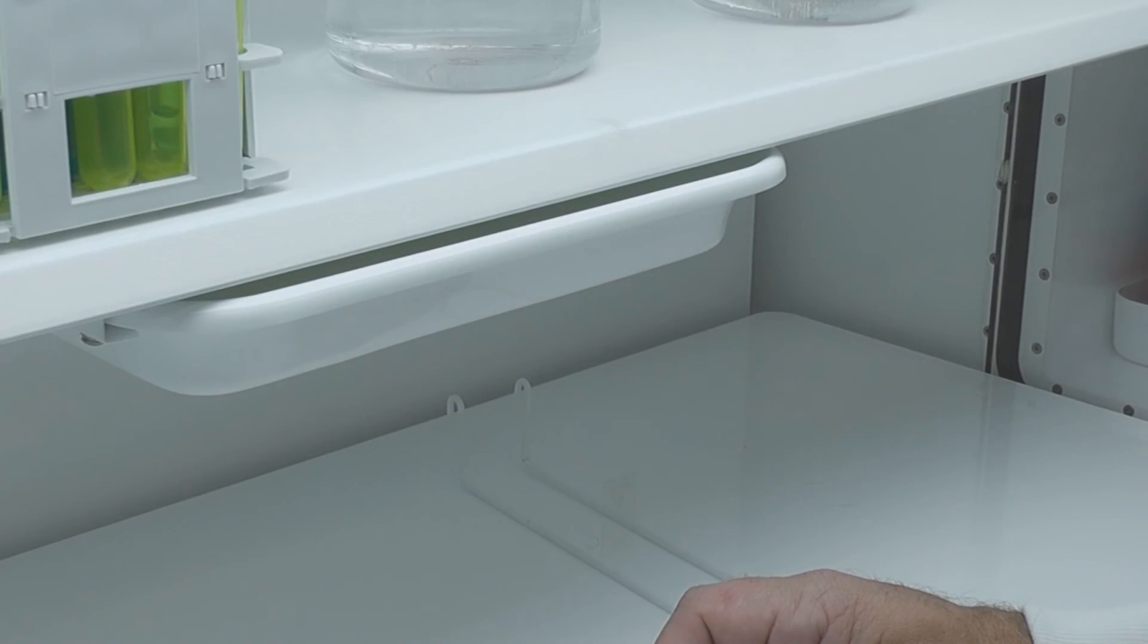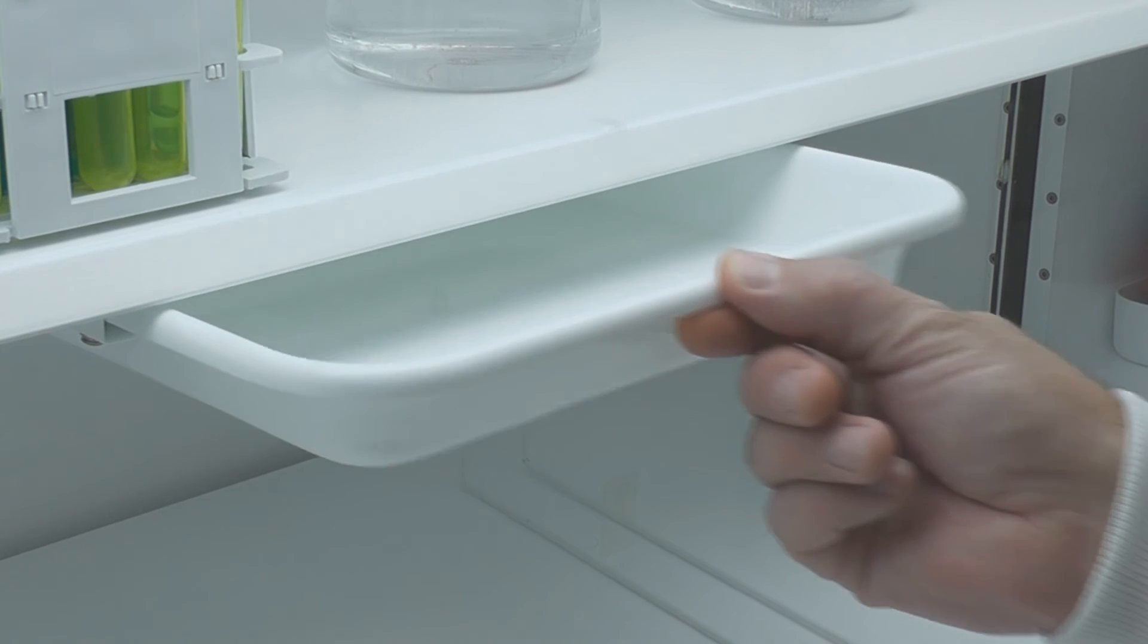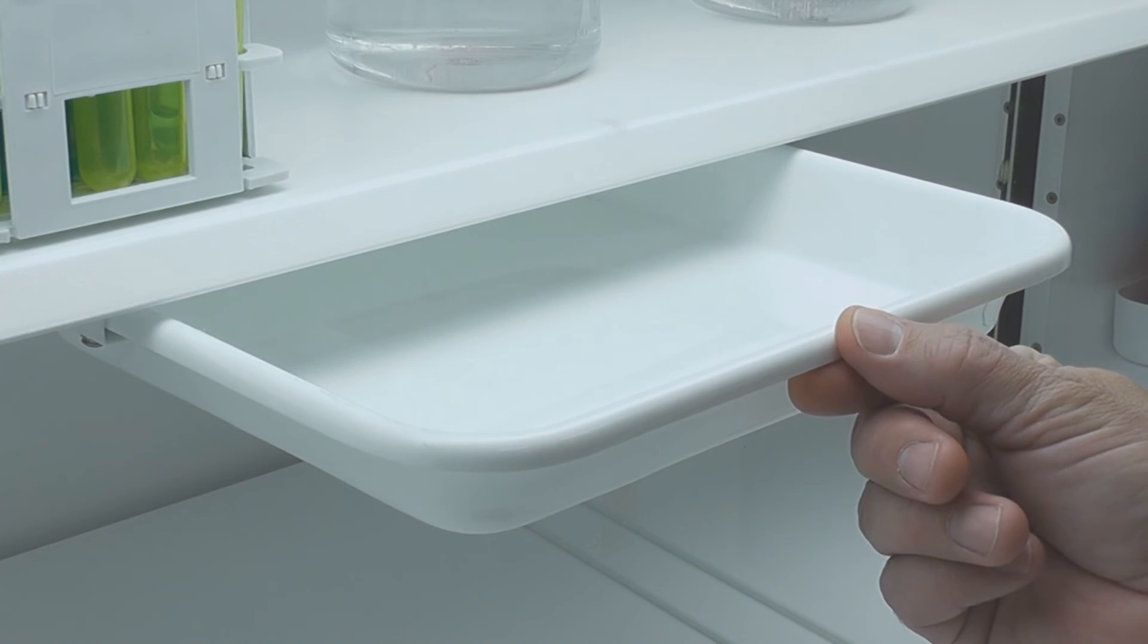One or two storage trays can be positioned under the shelf. This is either a factory fitted option or trays can be fitted on site.